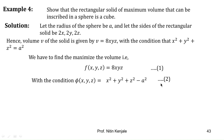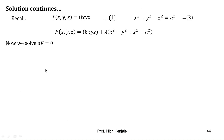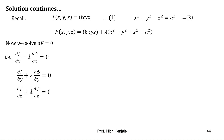We define Lagrange's function F = f + λφ, and substitute for f and φ. Next, we find Lagrange's equations by equating the total derivative of F to zero. This gives three equations. From the first equation: ∂f/∂x + λ(∂φ/∂x) = 0, i.e., 8yz + 2λx = 0.